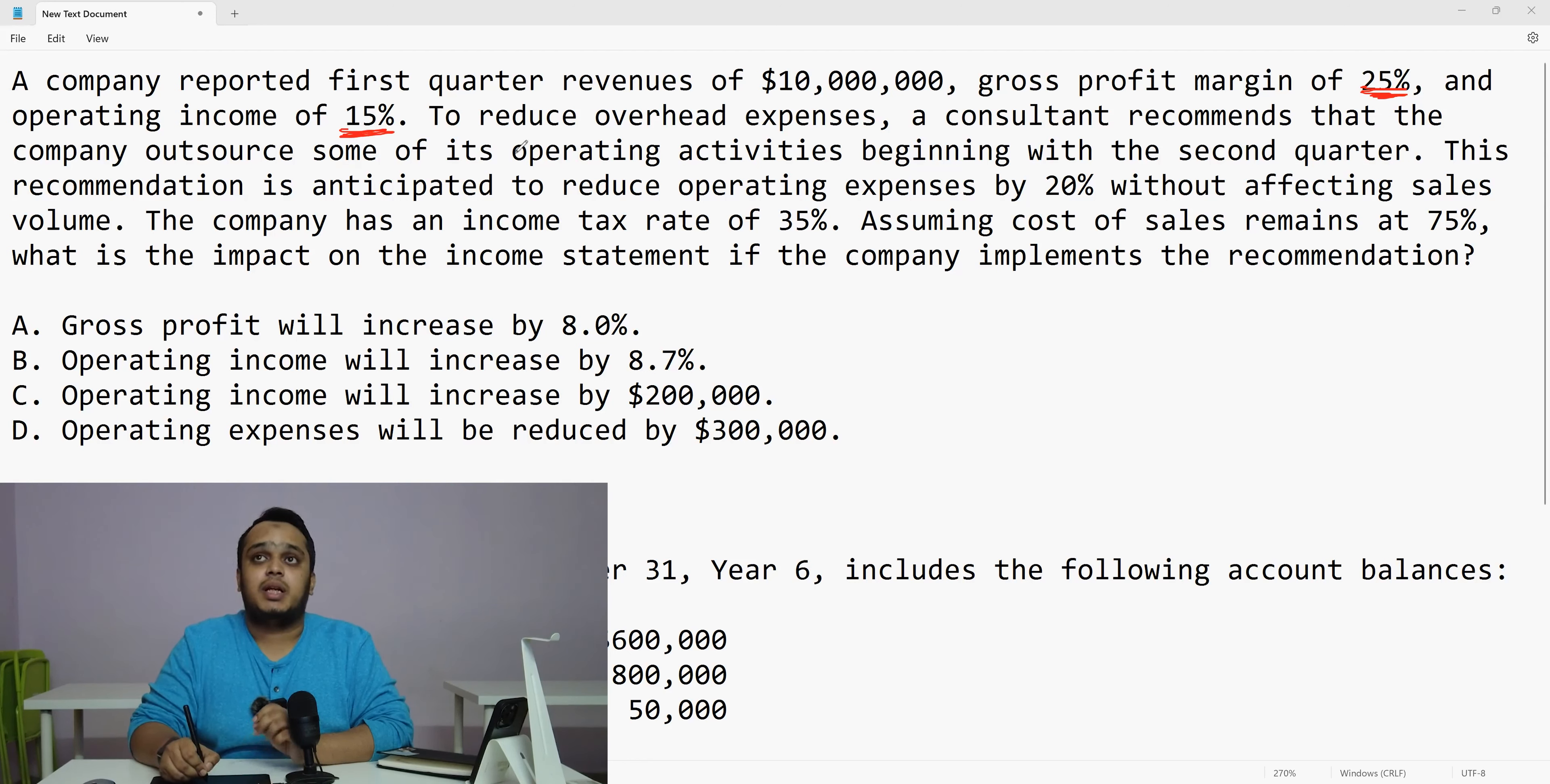To reduce the overhead expenses, a consultant recommends that the company outsource some of its operating activities beginning from the second quarter. This recommendation is anticipated to reduce the operating expense by 20% without affecting sales volume. The company has an income tax rate of 35%. Assuming cost of sales remains at 75%. What is the impact on the income statement if the company implements the recommendation?